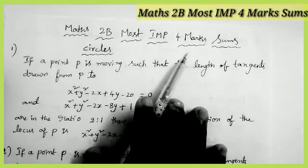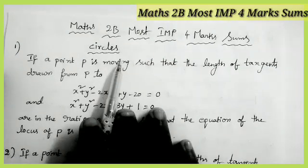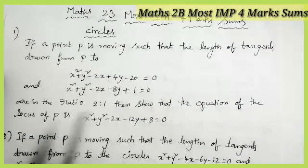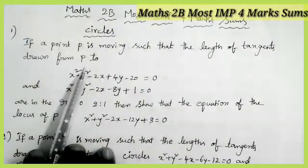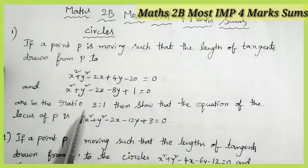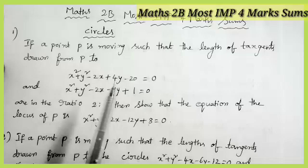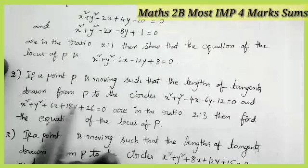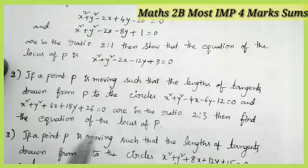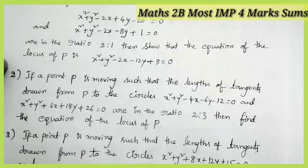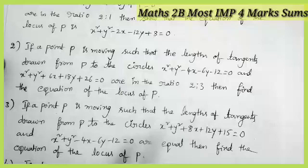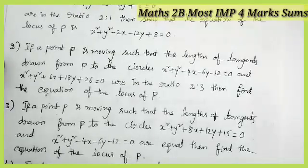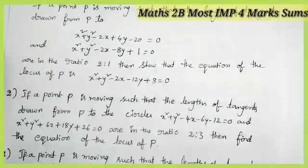The first topic is circles. From the circles topic, we get one question in the examination. See the first problem: if a point P is moving such that the length of the tangents drawn from P to the four circles are in the ratio 2 is to 1, then show that the equation of the locus. This is the most important question from the second exercise. Next: if a point P is moving such that the lengths of the tangents drawn from P to the circles are in the ratio 2 is to 3, then find the equation of the locus of the point P. Next: if the lengths of the tangents drawn from P to the circles are equal, then find the equation of the locus of point P. These three questions are of the same model from the second exercise.